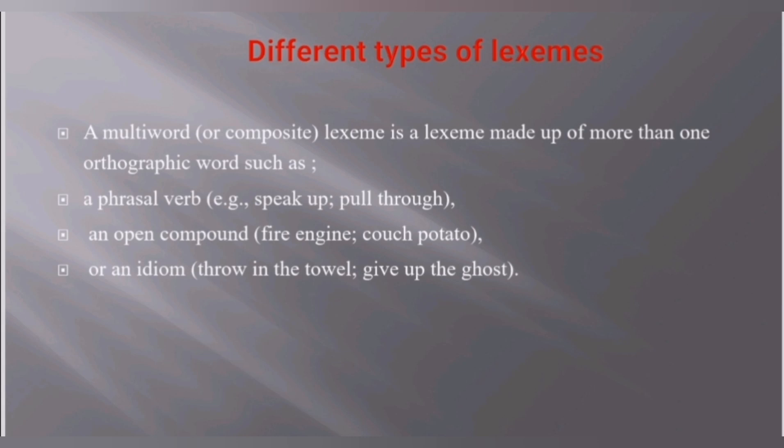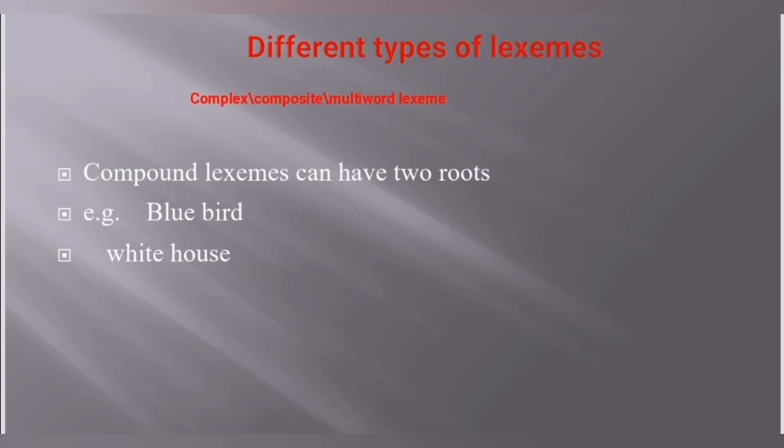A compound lexeme can have two roots. In this case you can have two roots like 'bluebird' and 'whitehouse.' These are two different words with two different meanings, but you can join them into a single word and create a single lexeme.